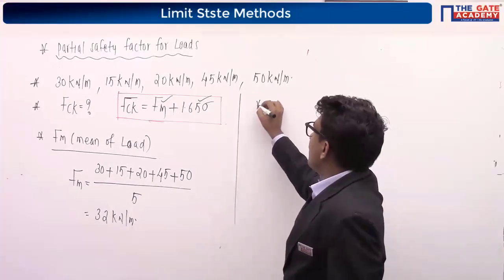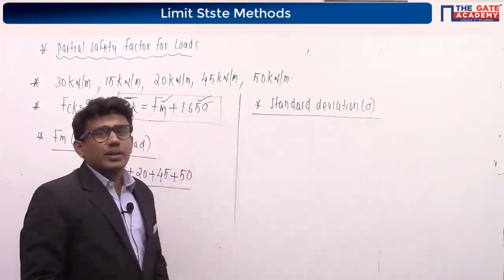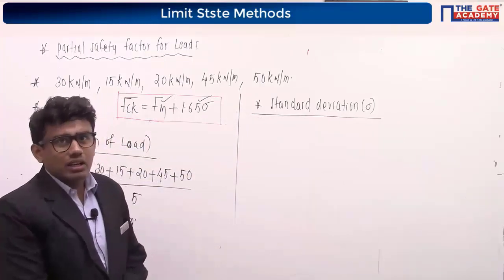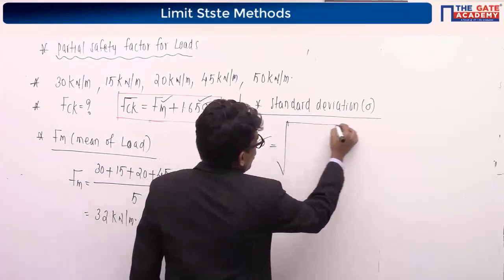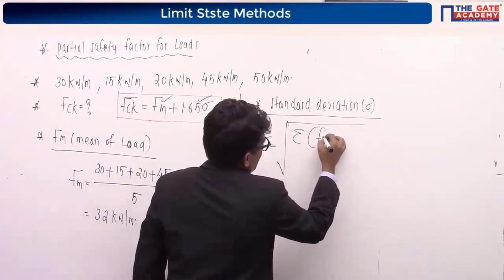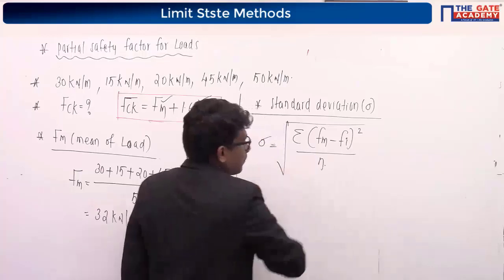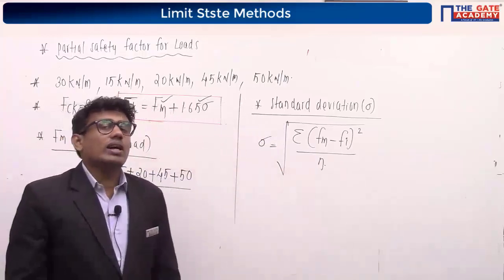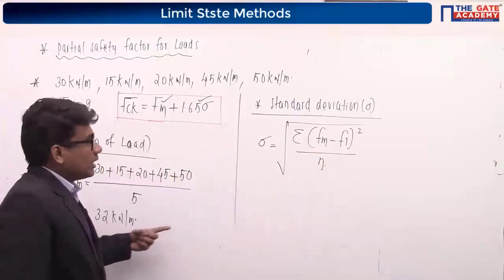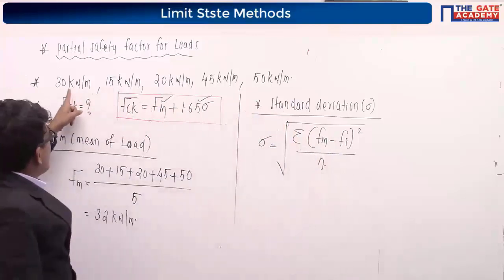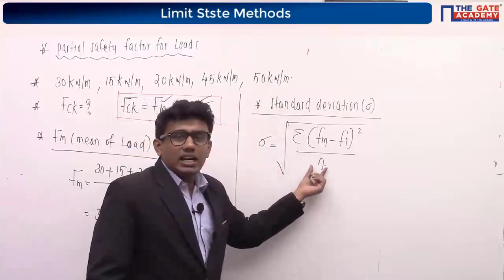Now we calculate the standard deviation sigma. The formula is: sigma = square root of [sum of (Fm minus fi) squared, divided by n], where Fm is the mean load, fi stands for f1, f2, f3, f4, fy, etc., and n is the number of samples.